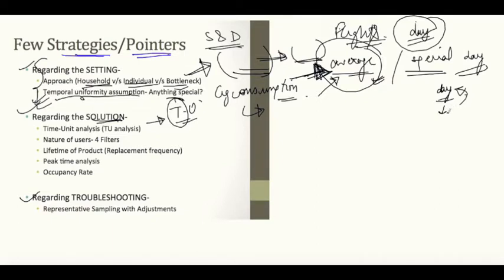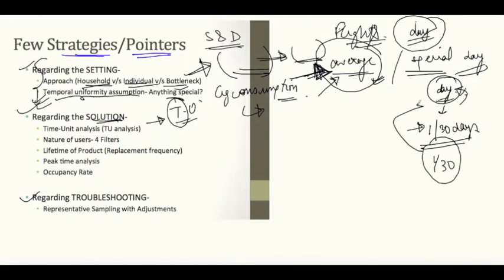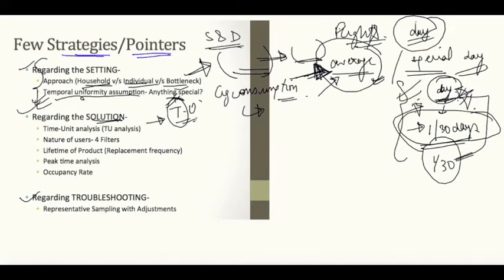For example, if you have to estimate the number of people going to movies in a day, not every individual goes to a movie daily. If you're solving from the demand side and you assume most people go once a month, you're working with one per 30 days. So you solve to a standard consumption pattern first, then multiply by a fraction to reach your target time unit. Remember to ask for the time period and use this strategy.